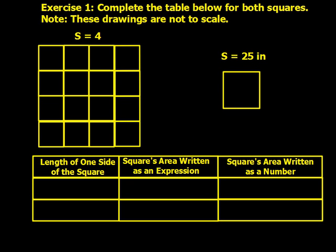Exercise 1, complete the table below for both squares. Note these drawings are not drawn to scale. So whenever you just see the letter S, this is telling you the length of the side or what the side is equal to. So go ahead, pause the video, take a few minutes, and complete the first two rows of this table, and then come back when you're ready.